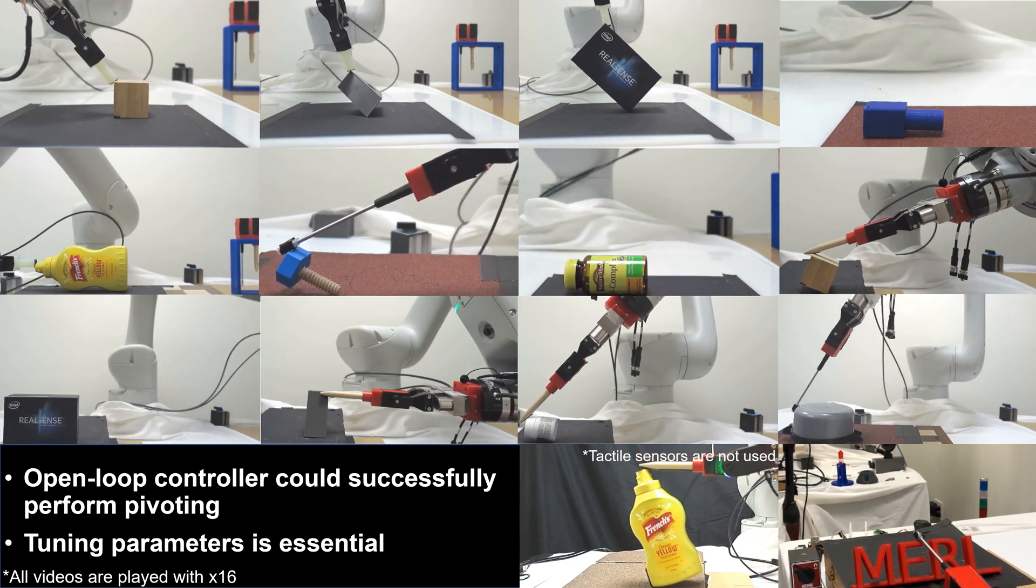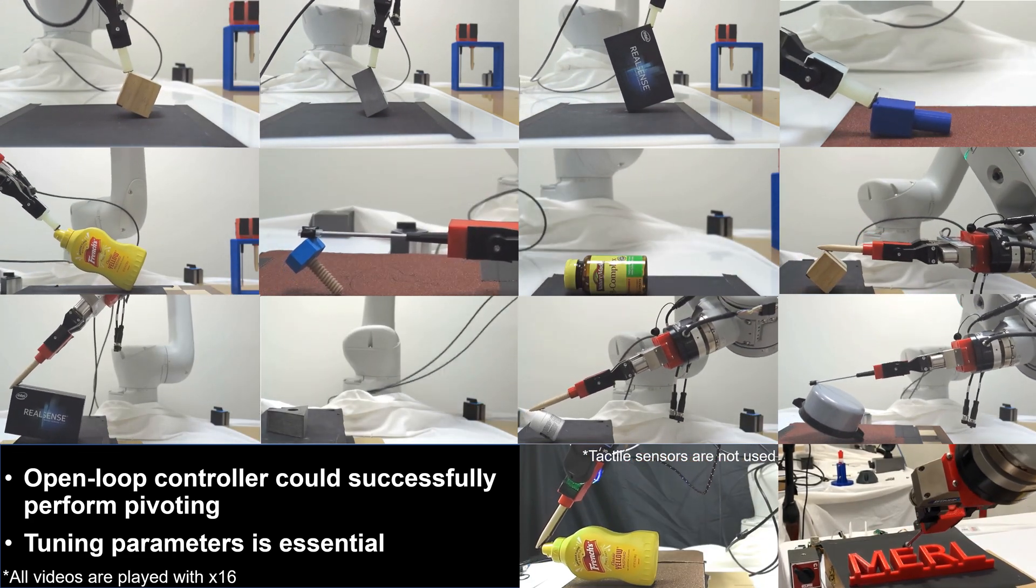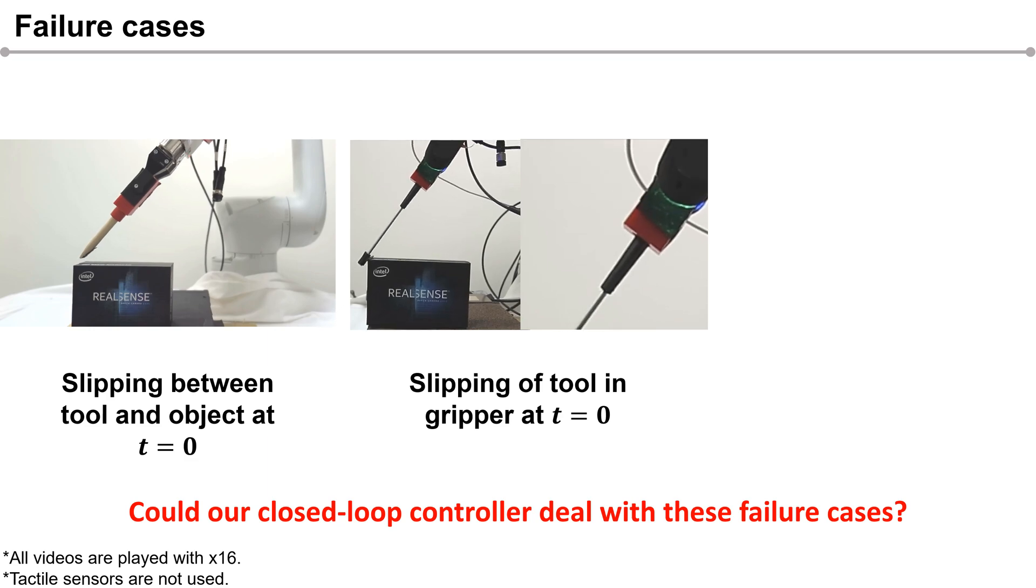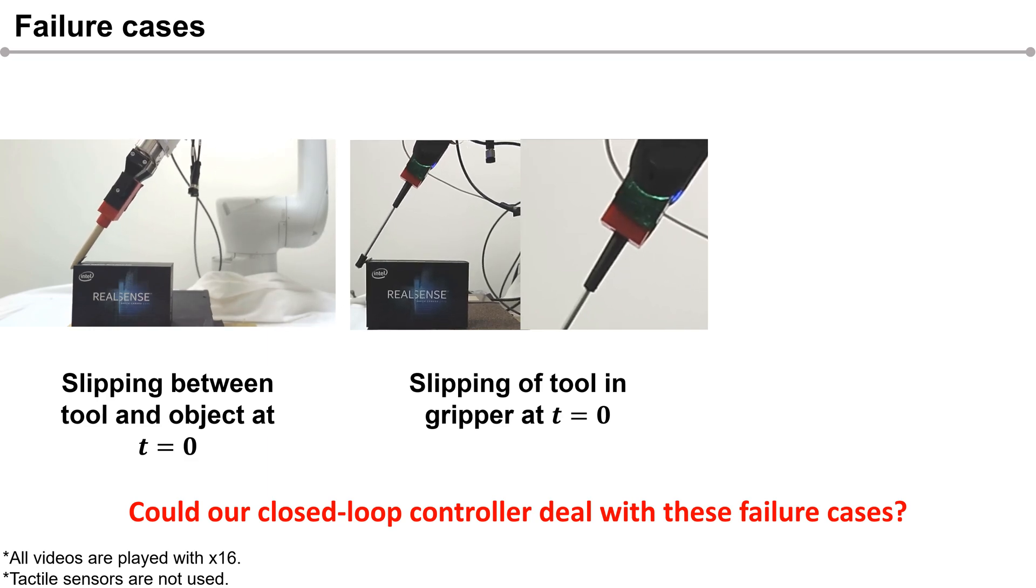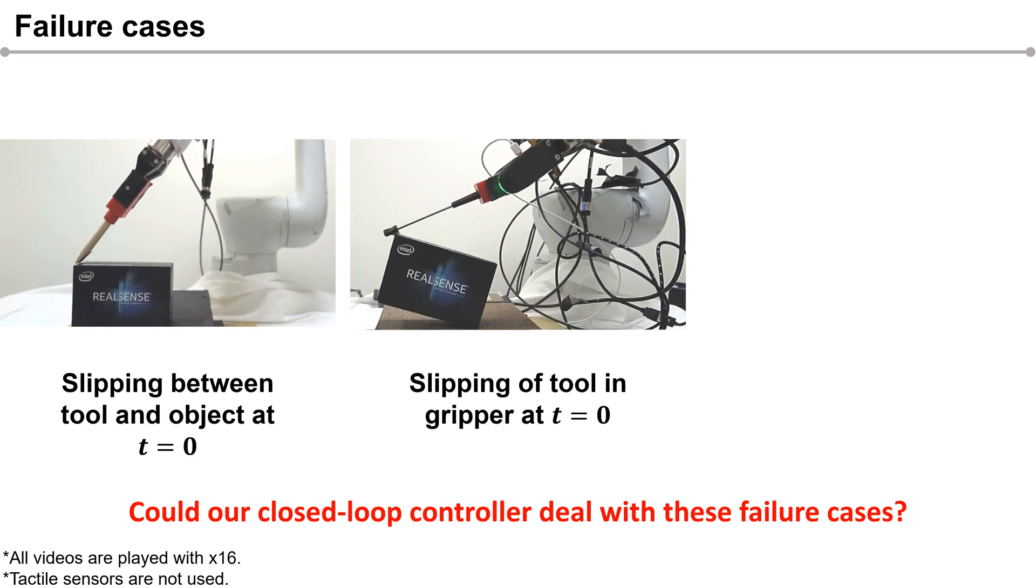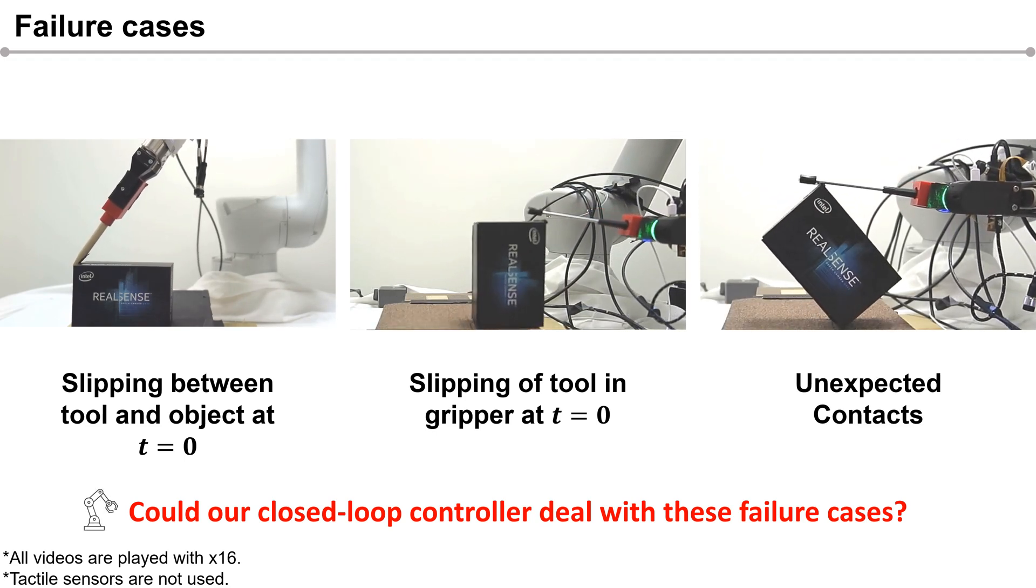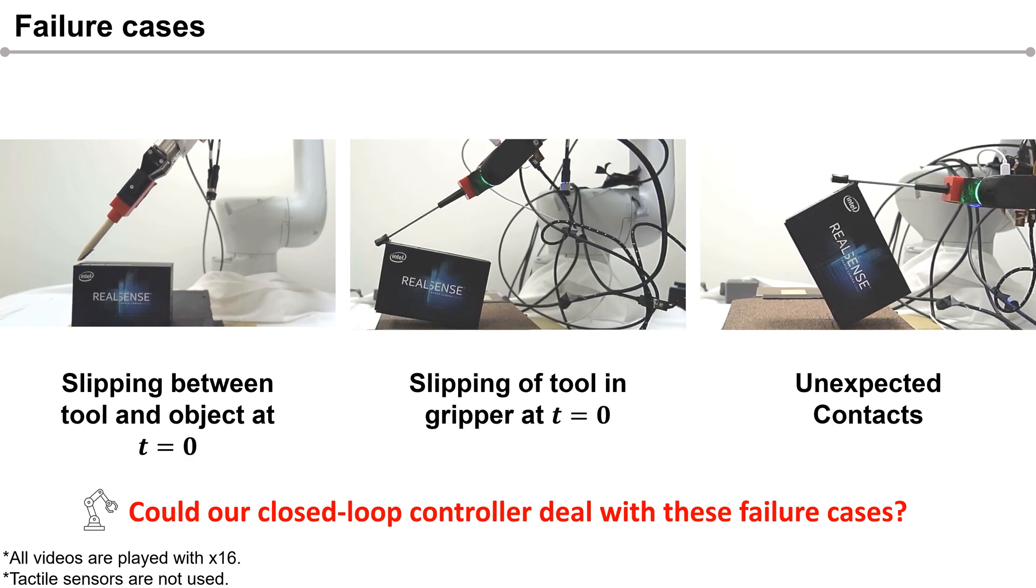However, we observed the following failure cases. At T equals 0, we observe that tool slips against the object. We also observe that the tool rotates with respect to the gripper if it pushes the object too strongly. The open-loop controller also results in loss of contact with the object under unexpected contact.